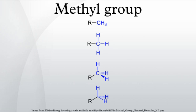Methyl radical: the methyl radical has the formula CH3. It exists in dilute gases, but in more concentrated form it readily dimerizes to ethane. It can be produced by thermal decomposition of certain compounds, especially those with an N=N linkage.